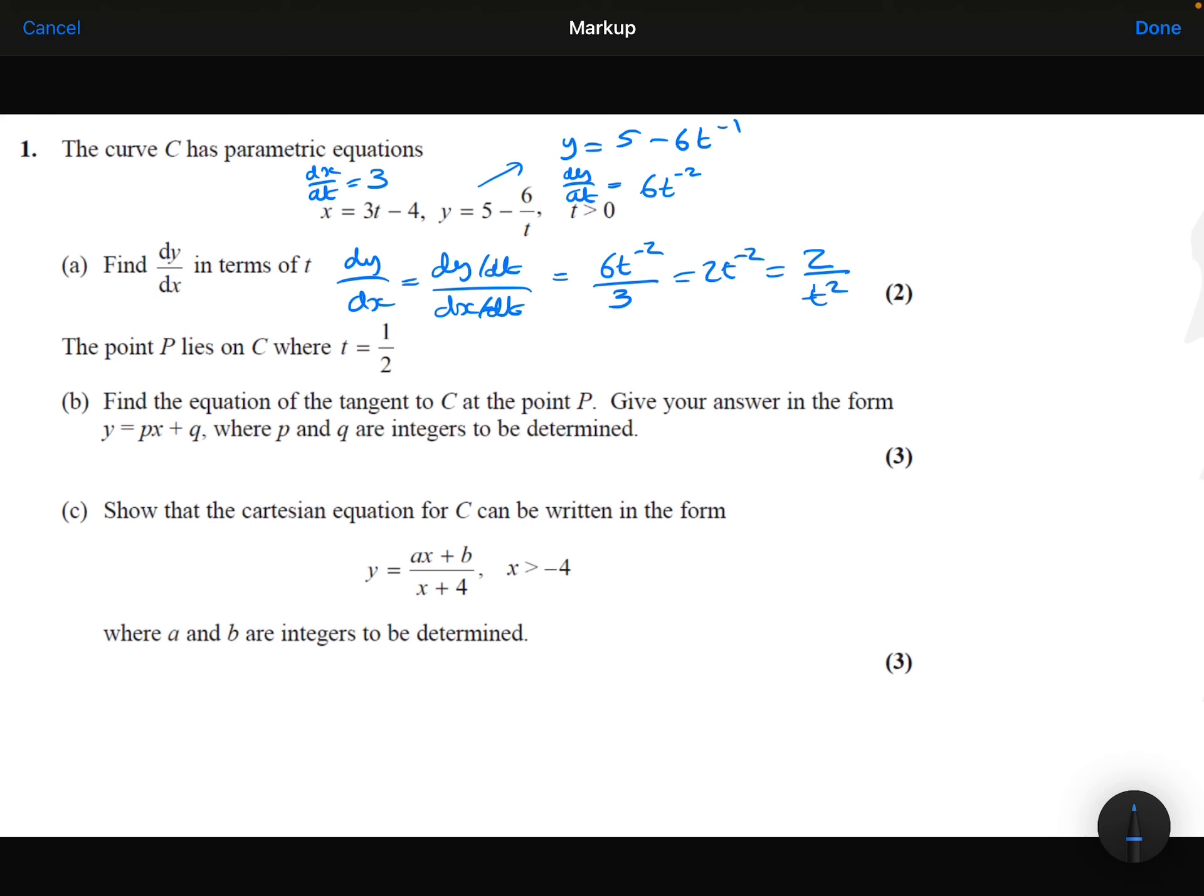We're then told that the point P lies on the curve where t is one-half, and we need to find the equation of the tangent to the curve at point P, giving our answer in the form y equals px plus q.